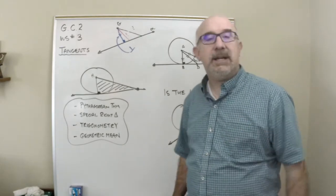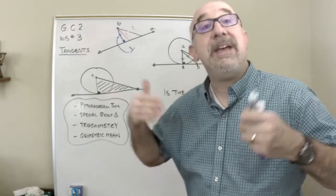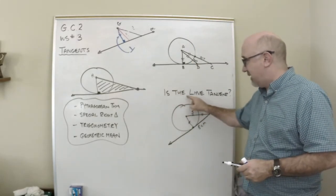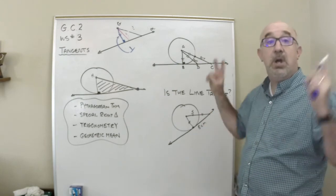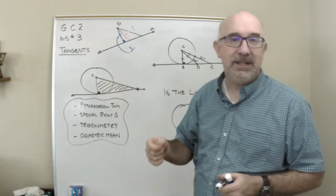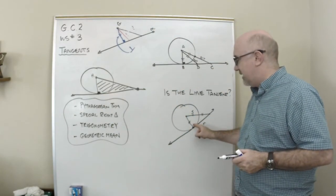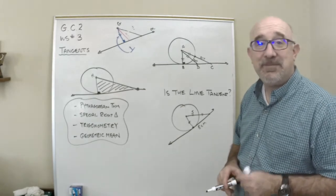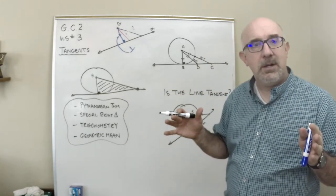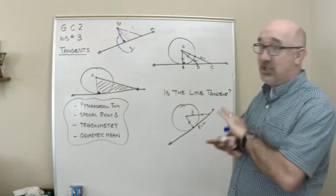Let me talk about one last thing: the reverse argument — the converse — which says, how would I know if a line is tangent? They might give you a case and say: is the line tangent? We're not assuming it is; we're trying to prove that it is. When it's tangent, it's a right angle. So I want to see: is that a right angle? The way you test it is the Pythagorean theorem. If the Pythagorean theorem works, then that's a right angle. If it doesn't work, it's not a right angle, and that is not a tangent line.